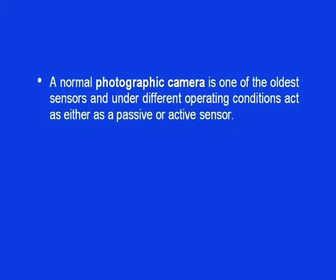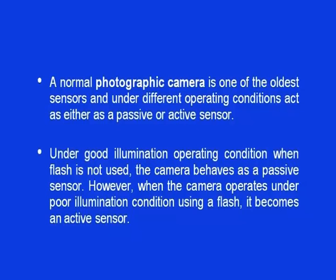Consider the example of a normal photographic camera, one of the oldest sensors. Under different operating conditions it acts as a passive or active sensor. Under good illumination conditions when the flash is not used, the camera behaves as a passive sensor. However, when the camera operates under poor illumination conditions using a flash, it becomes an active sensor.